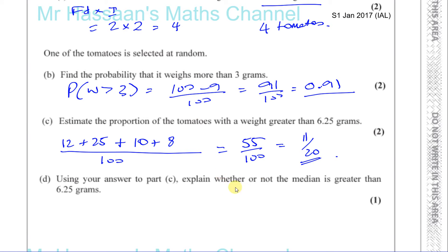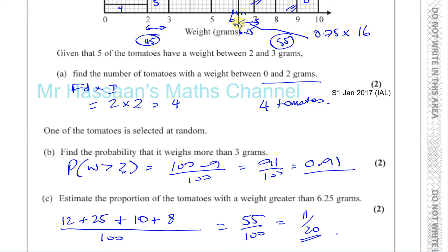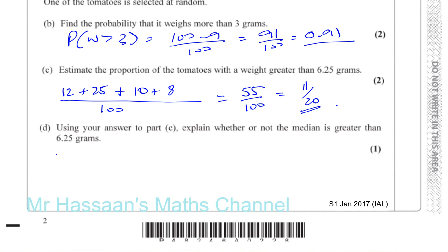Part D says: using your answer to part C, explain whether or not the median is greater than 6.25 grams. We can see that 55 of the tomatoes weigh more than 6.25 grams, meaning 45 are less than 6.25. The median is such that there's 50% of the data on either side. Since 55% are above 6.25, the median must be greater than 6.25 grams, so that you end up with exactly 50% on either side.